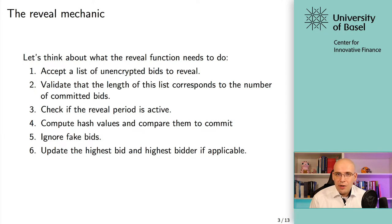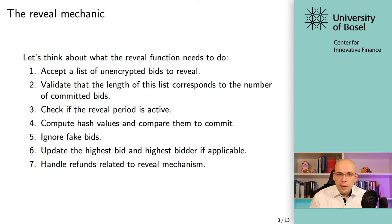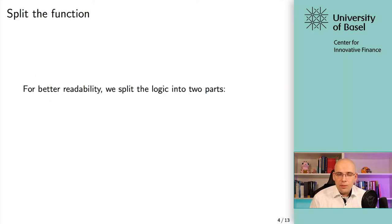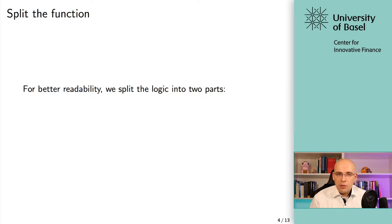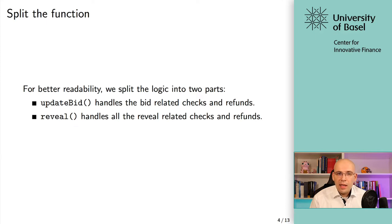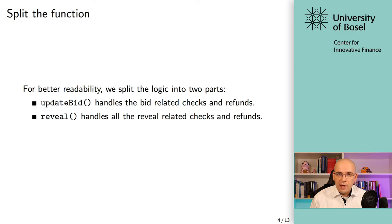Number seven, handle refunds related to the reveal mechanism. To make things more readable, we split the logic into two parts: `updateBid`, which handles the bid-related checks and refunds, and `reveal`, which handles all the reveal-related checks and refunds. It's generally a good idea that when things can be separated logically, you also separate them into distinct functions.